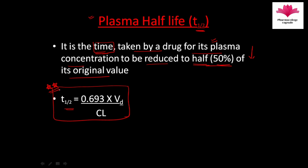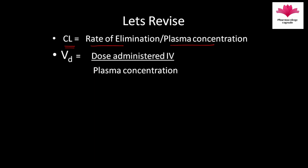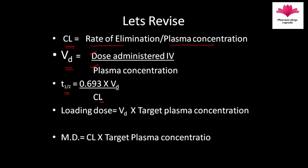Let us quickly revise what we have studied. Clearance is the volume of plasma freed completely of drug in unit time, calculated as rate of elimination divided by plasma concentration. Volume of distribution is calculated as dose administered IV divided by plasma concentration. T-half is calculated as 0.693 multiplied by volume of distribution, divided by clearance. Loading dose depends on volume of distribution, and maintenance dose depends on clearance.